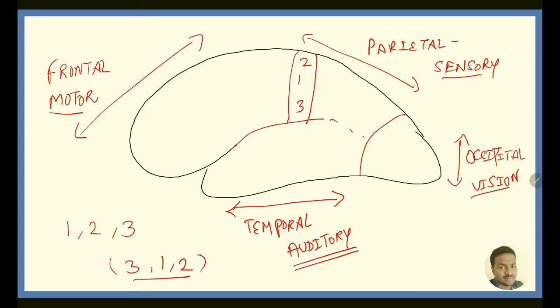Next, to remember all the Brodmann's area in the frontal lobe, very simple mnemonic, just take the multiplication of 2. So, 2, 4, 6, 8. These are all the Brodmann's area in the frontal lobe, concerned with motor activities.